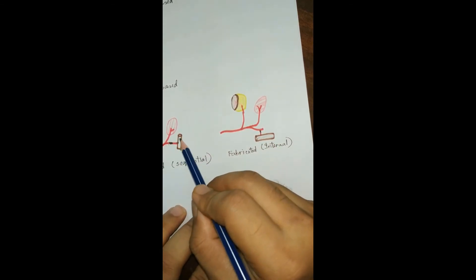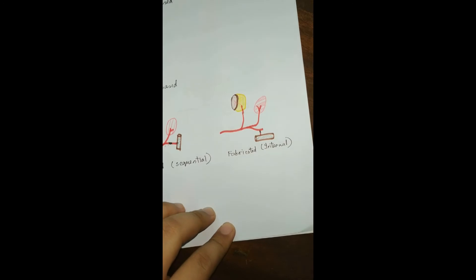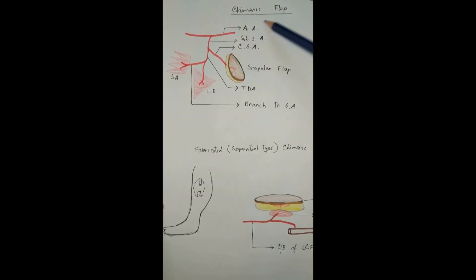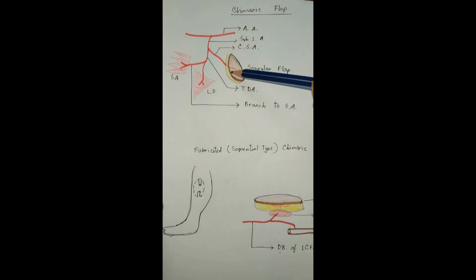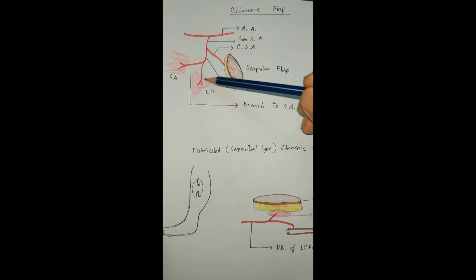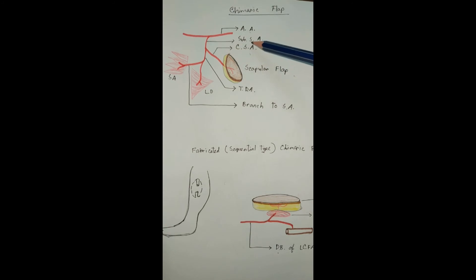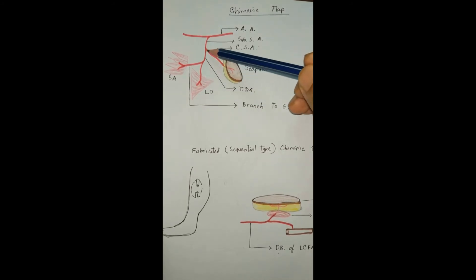If we add this bone to any branches of the chimeric flap, then we call it an internal type of chimeric flap. A perfect example of a chimeric flap is the subscapular artery system. The subscapular artery arises from the third part of the axillary artery. It gives branches to the circumflex scapular artery, which is the pedicle for the scapular flap, and then gives the thoracodorsal artery which supplies the latissimus dorsi and serratus anterior muscle. If we elevate all these flaps based on this subscapular artery, they are not attached to each other but supplied by a common source vessel — that is a chimeric flap.